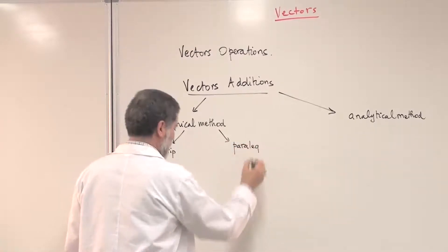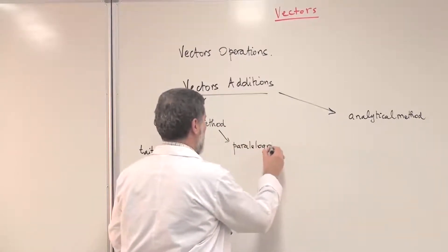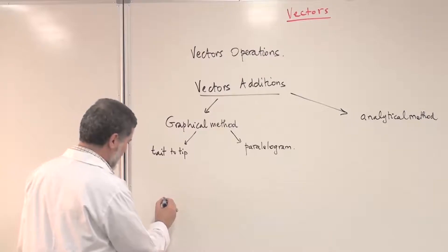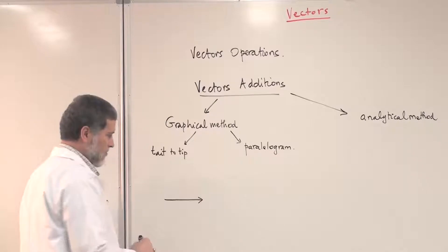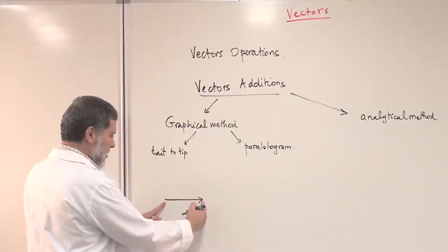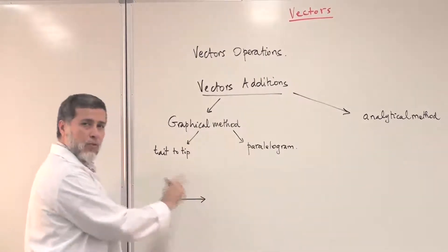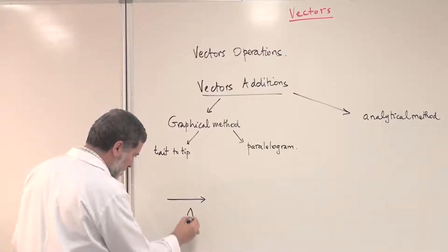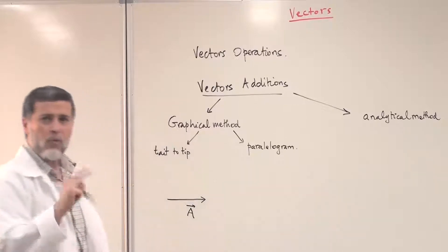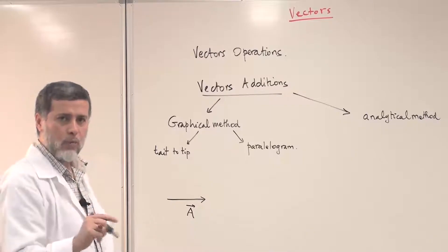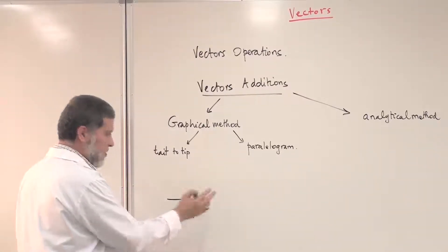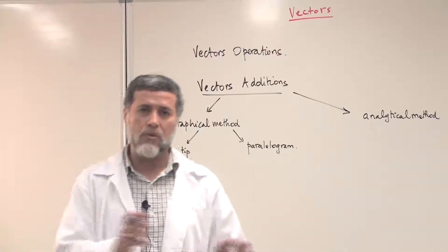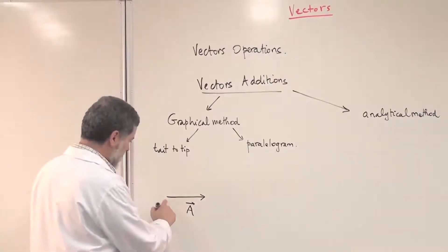A vector, as mentioned in the previous video, can be represented by a magnitude and a direction. The length of the line represents the magnitude, and the arrow represents the direction. A vector is always defined by both magnitude and direction — giving the magnitude alone is not enough, and giving the direction without the magnitude is not enough.